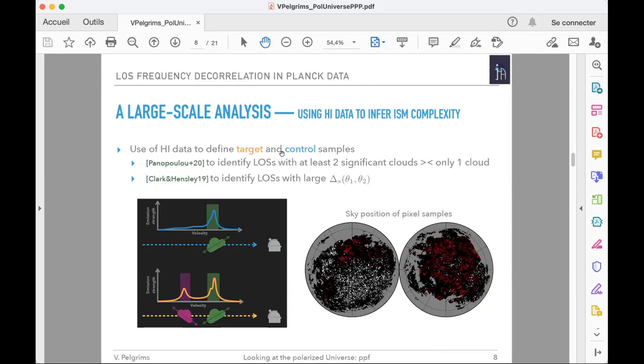Our plan was to use HI data to infer ISM complexity and build two samples: target and control. For that, we use the cloud decomposition of Panopoulou and Lenz to identify lines of sight with at least two significant clouds and pixels with only one cloud. Then we use the Clark and Ensley catalog to identify lines of sight where magnetic field orientation is significantly different in the dominant clouds. We ended up with this sky distribution of pixels, with the northern hemisphere shown here.